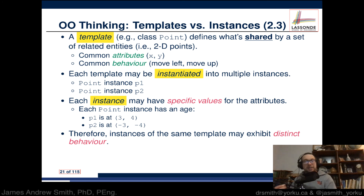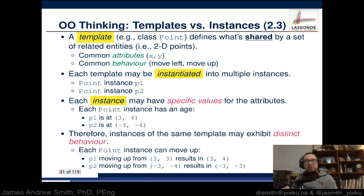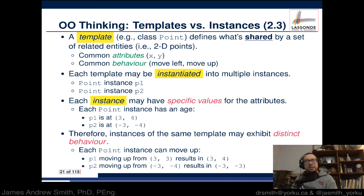Instances of the same template can exhibit distinct behaviors based on their positions. Object p1 can move up, going from (3, 3) to (3, 4) using the action that allows movement in the y direction. Object p2 can move from x = -3, y = -4 up to x = -3, y = -3, only as defined by the behaviors permitted for that point.